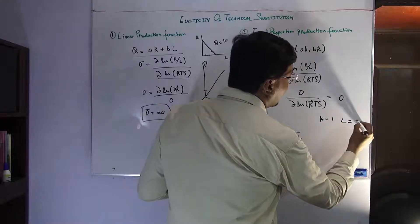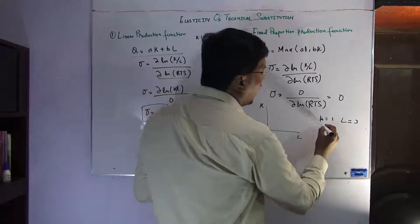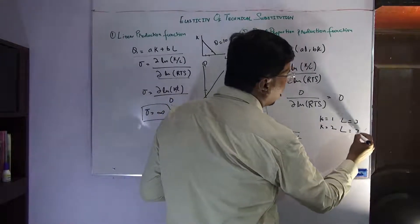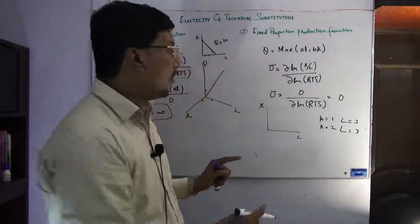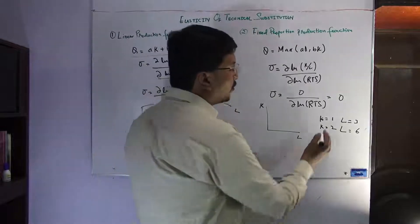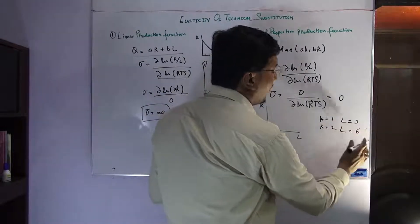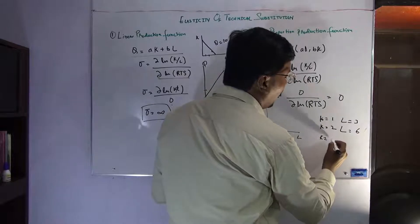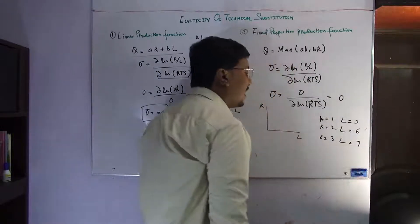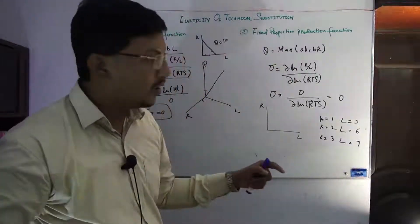The same proportion is always used — for example, you have a machine and the ratio is 1 to 3, so you need labor at 1 over 3. This is the fixed proportion you always have to maintain.